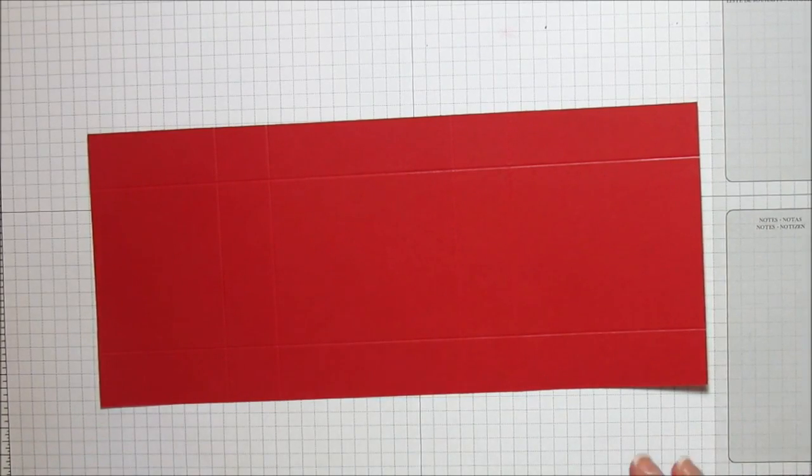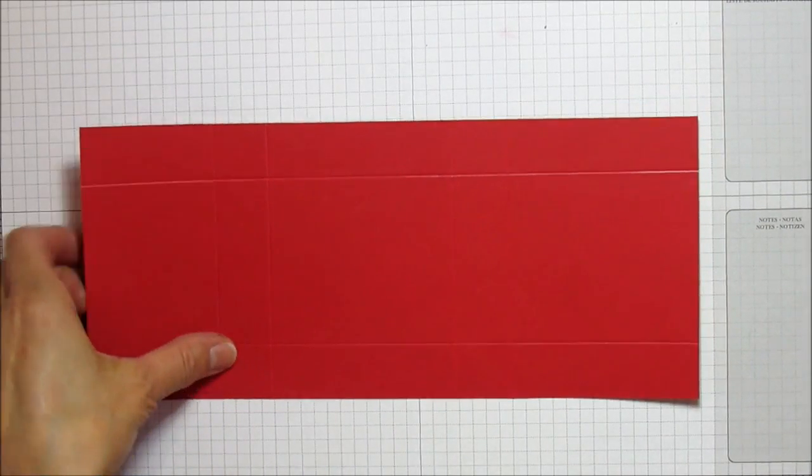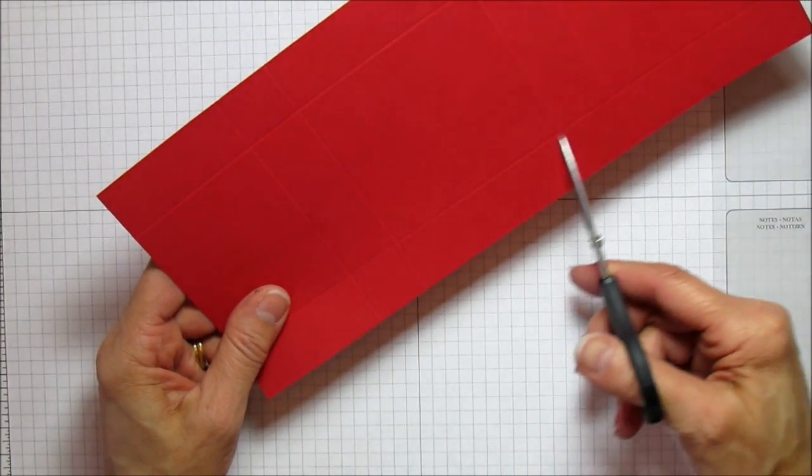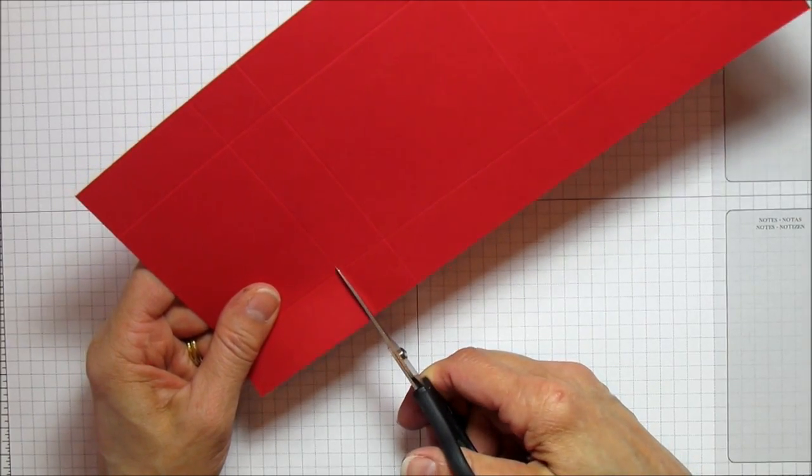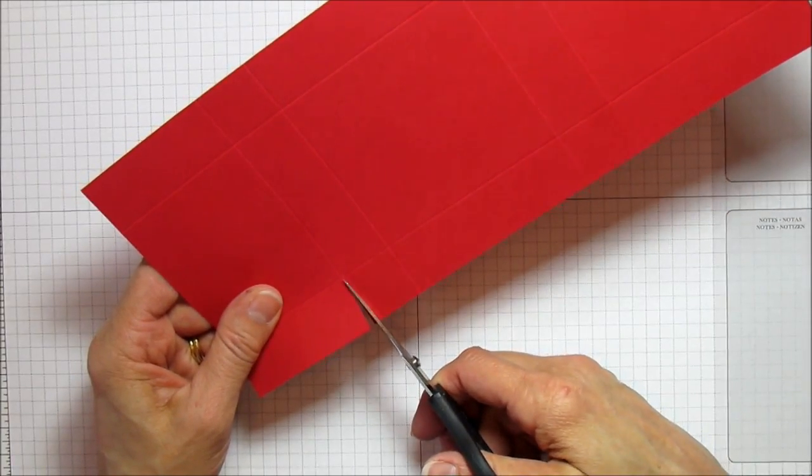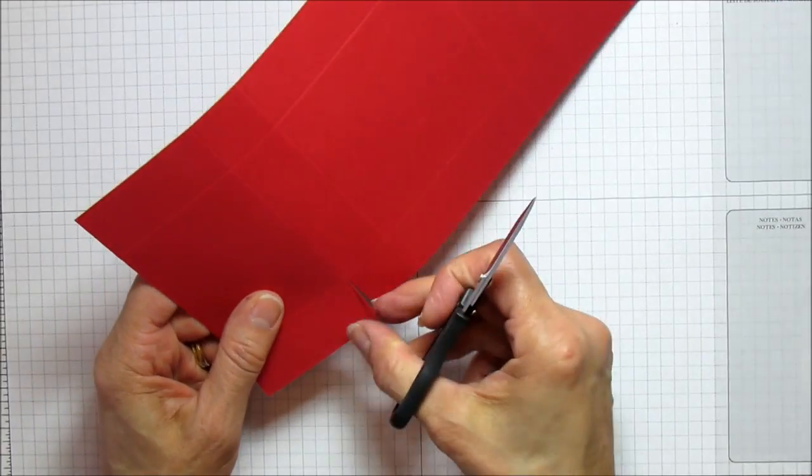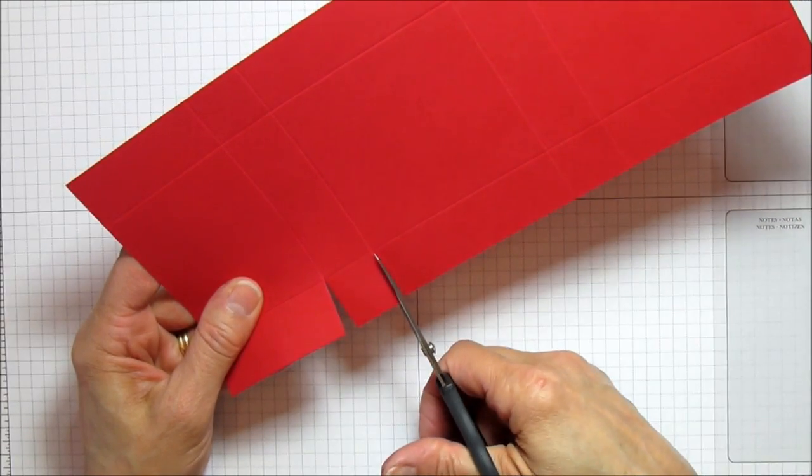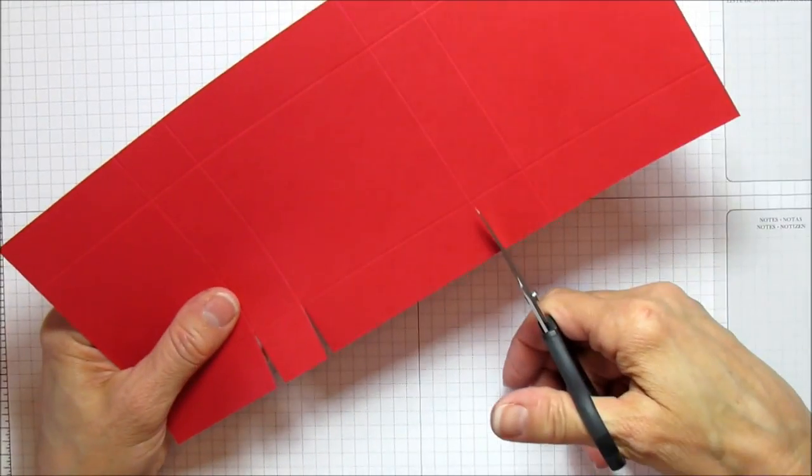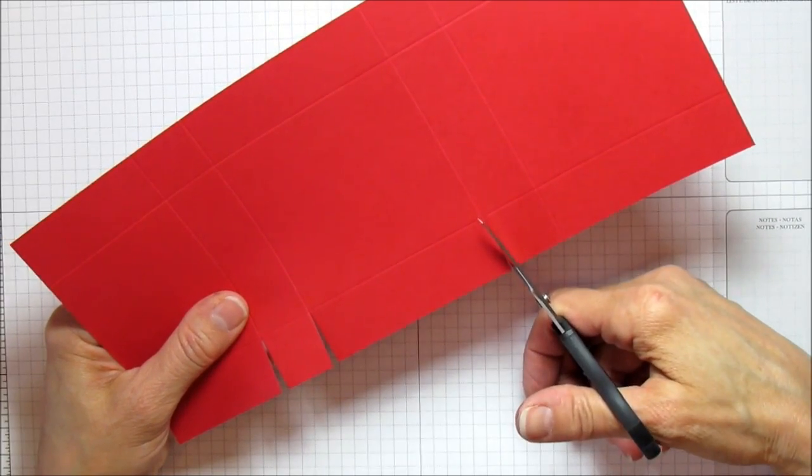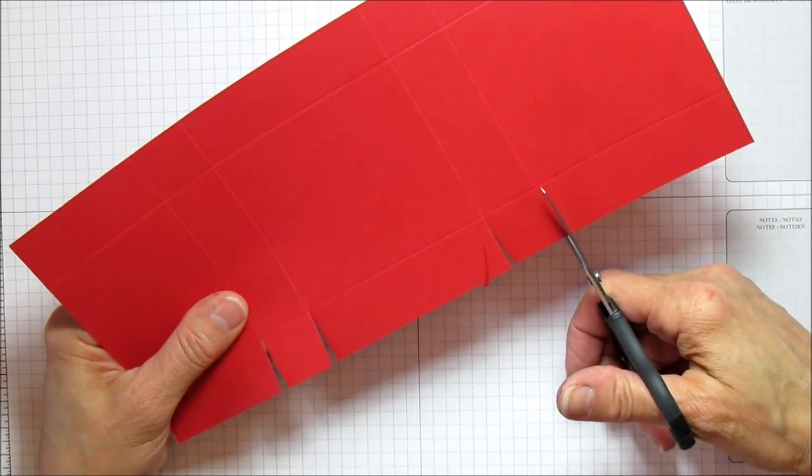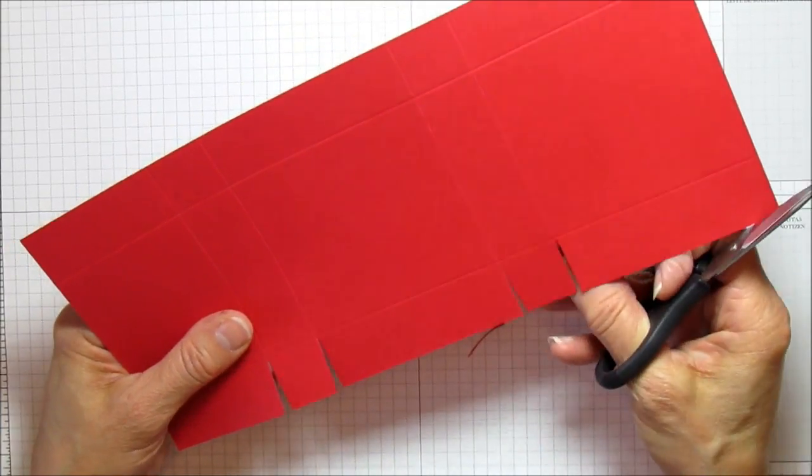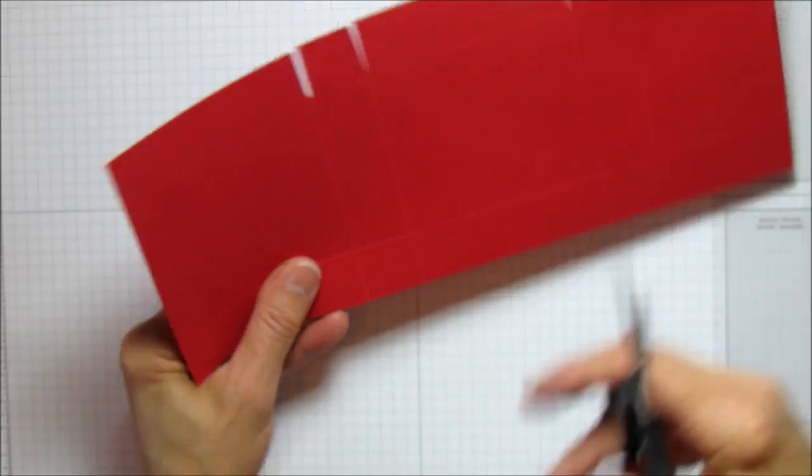Now we're ready to cut it and create our little flaps here. We're going to cut up each one of these score marks to the first score mark here. On this box it would fold a lot nicer when you clip a little bit off the edge there, so we're going to do that on each one of these. I'm going to turn it around and do the exact same thing on this other side.